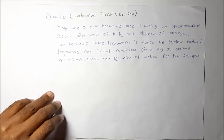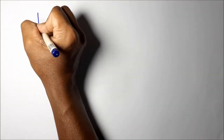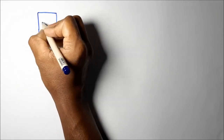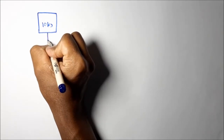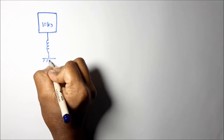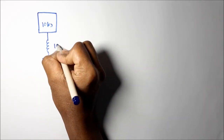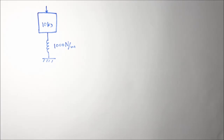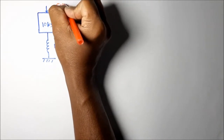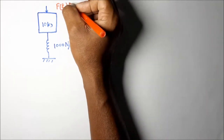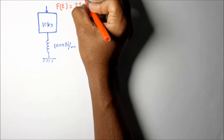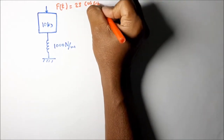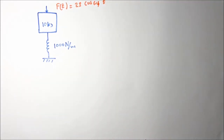Let me draw the sketch including all the details. The mass is 10 kilograms, it is an undamped system. The spring stiffness is also given as 1000 Newton per meter. The forcing function is acting on the system, and the magnitude of the forcing function f(t) equals 23 cos(ωf · t), where ωf is the forcing function frequency.